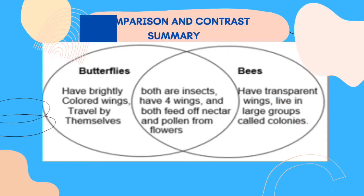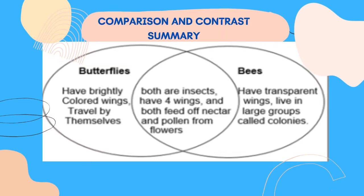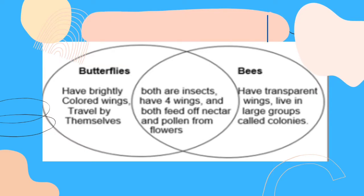Now let us summarize the comparison and contrast according to the selection about butterflies and bees. The similarities: both are insects, both have four wings, and both feed off nectar and pollen from flowers. The differences: butterflies have brightly colored wings and travel by themselves, while bees have transparent wings and live in large groups called colonies.